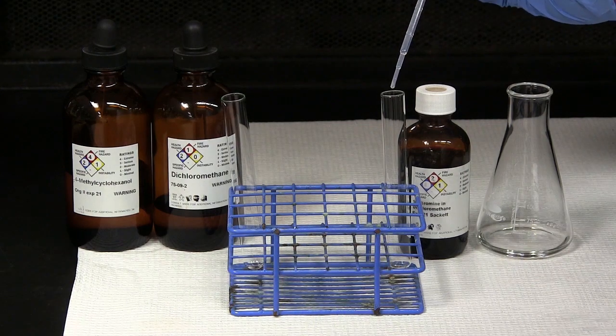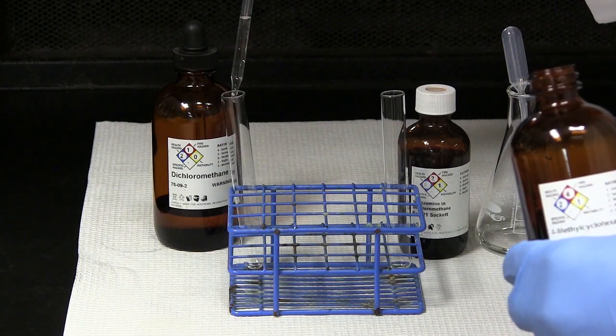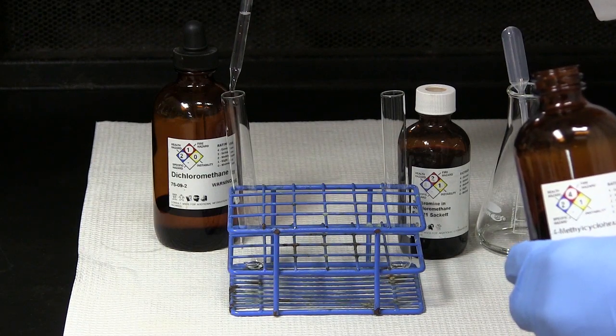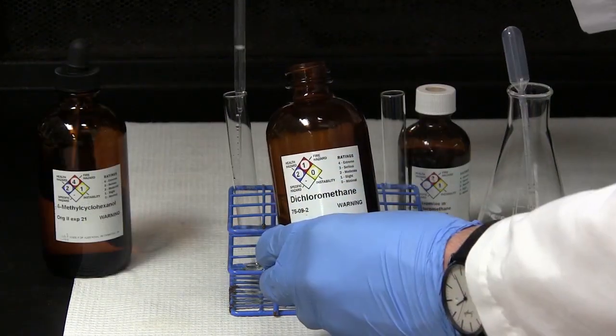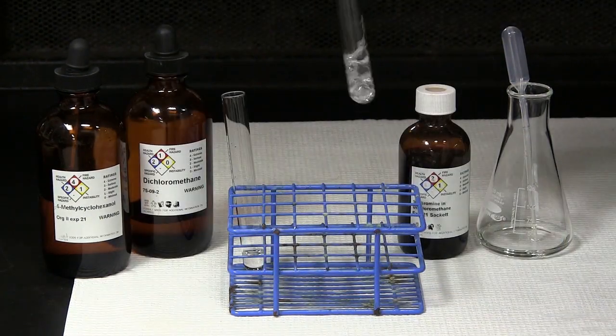Obtain two test tubes. Add about 5 drops of the product to one test tube and a similar amount of 4-methyl cyclohexanol to another test tube. Add 1 ml of dichloromethane to each test tube and gently shake to mix.